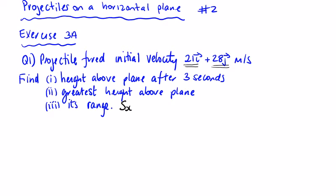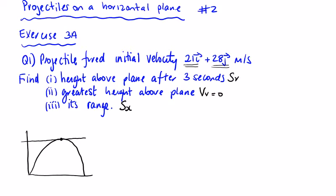The range is the displacement in x. The height above the plane is the displacement in y. For the greatest height, we look at v_y = 0. A quick sketch: it's fired up in the air, greatest height is at the top where the slope — the velocity — equals zero. s_x is the distance along the bottom, and the height after three seconds is at t = 3.